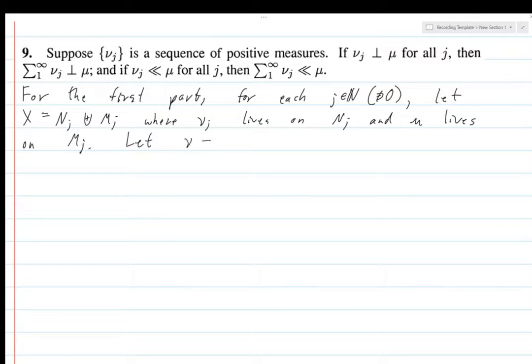Let nu equal sum from 1 to infinity of nu_j. Then nu is a measure and that's a fairly straightforward thing to check. Nu empty set equals the sum from 1 to infinity of nu_j of empty set which is equal to 0 because you're summing 0 a bunch of times.